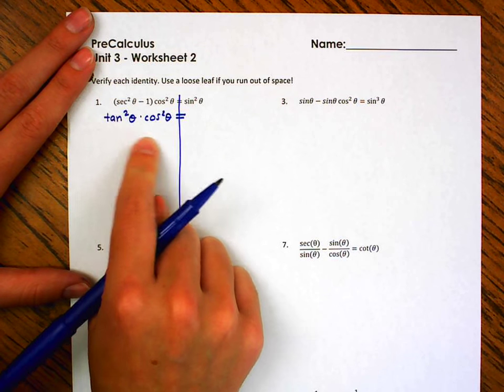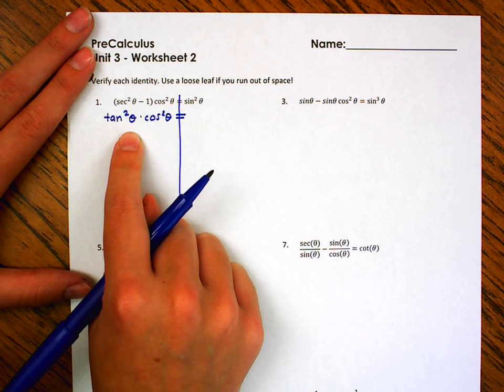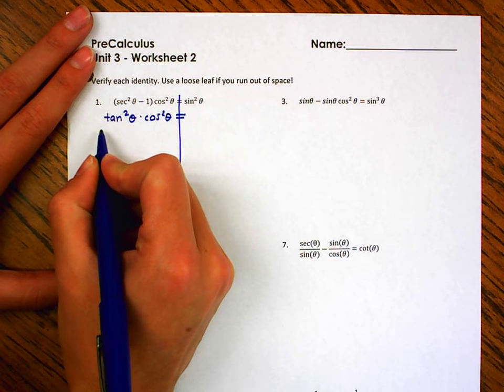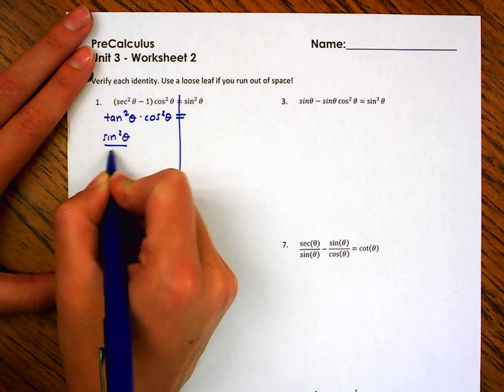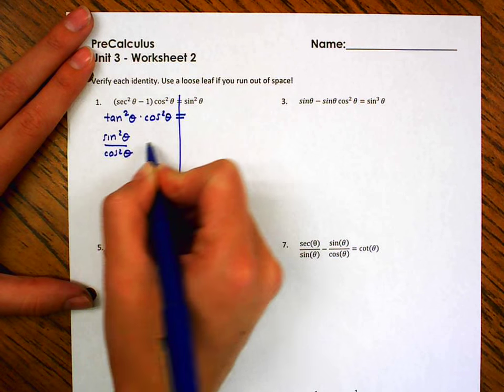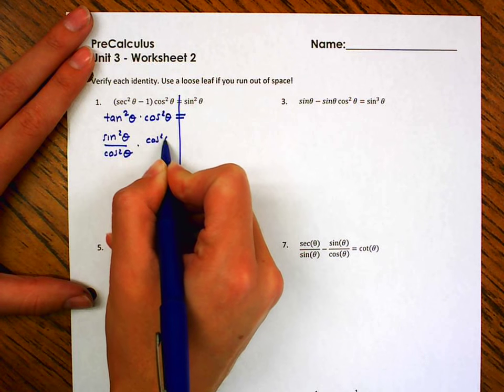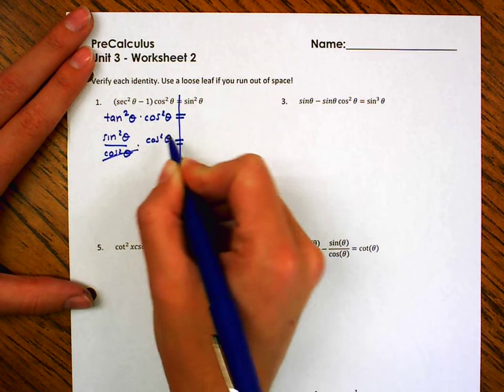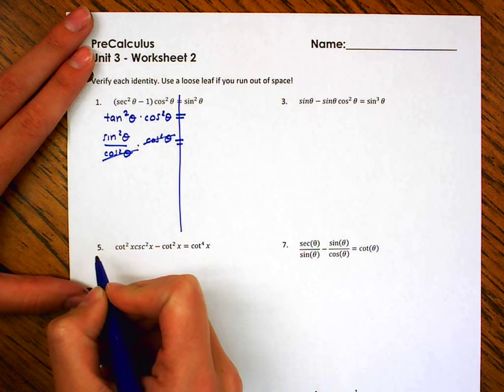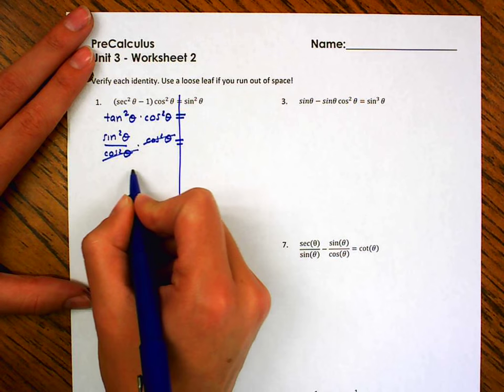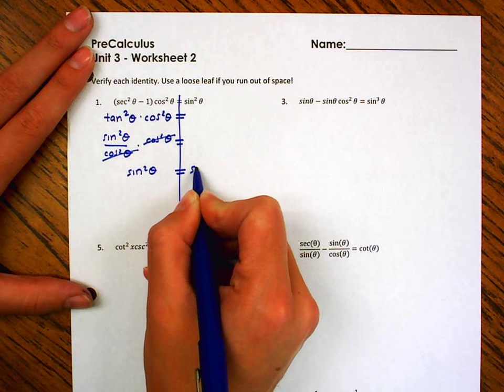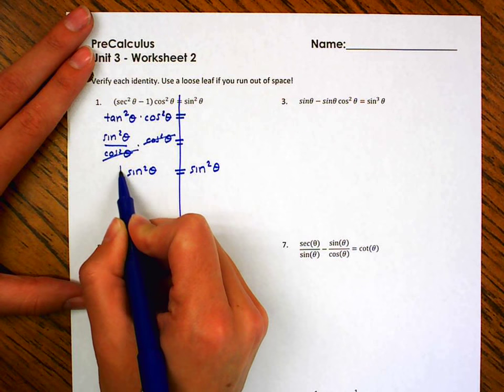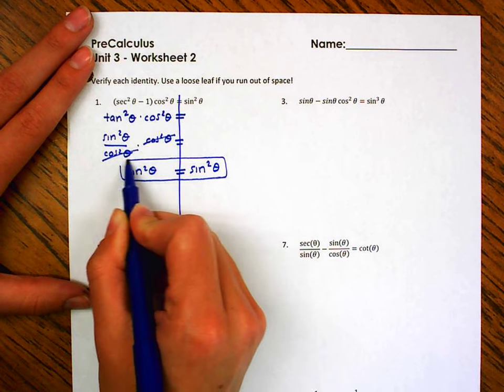Well, I want to see if I can simplify this more. I can't distribute anything. Let's see if I can change these into sines and cosines. Well, I know I can. I just want to see if that's helpful. And I notice I have cosine squared in the numerator or cosine squared in the denominator. That leaves me with a sine squared theta. And that's exactly what I have on this side. So, once I get these things to be the same, I'm done verifying.